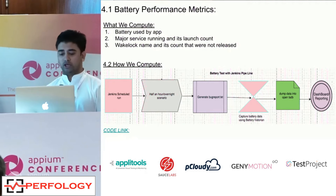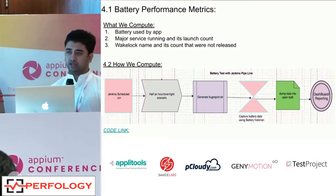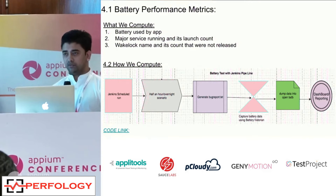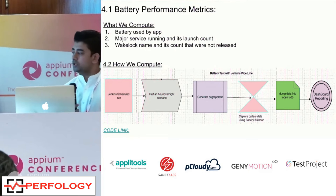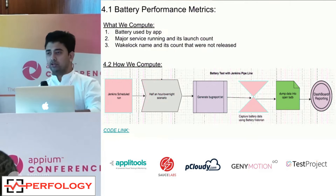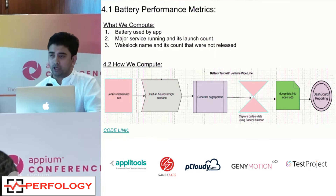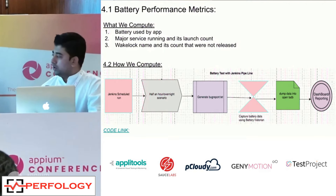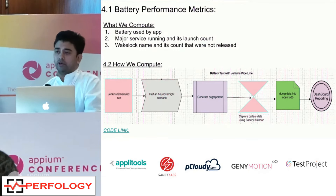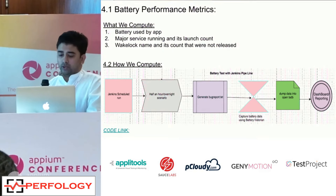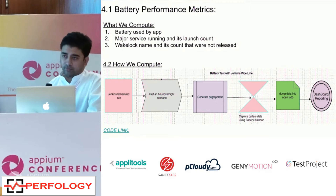We built these scenarios in our Espresso suite integrated with Jenkins CI. After test execution, we generate a bug report using an ADB command on the device and store it in device storage. The Battery Historian Docker image installed on a dedicated server pulls that bug report file and computes the data. We then built a service around it to extract only the relevant key matrices, storing them in our OpenTSDB for visualization.